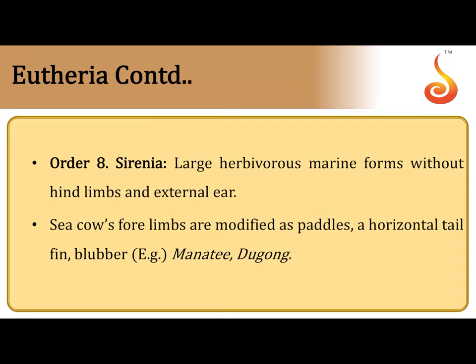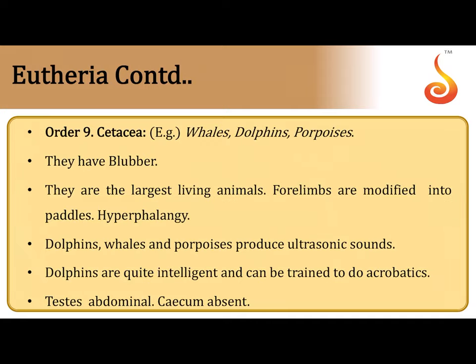Order Sirenia are large, aquatic herbivorous marine mammals found only in seas and oceans. They lack hind limbs; their forelimbs are modified into paddle-like structures for swimming. They have no external ear (pinna) and have a horizontal tail paddle — not a fin, as that term applies only to fishes. They have a thick layer of fat called blubber under their skin. Examples are manatees and dugongs.